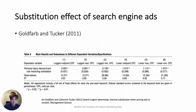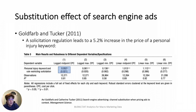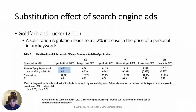This table presents the main result. The blue box indicates the estimate of coefficient δ — the lawyers' extra willingness to pay for the injury-related keyword in the solicitation-restricted cities. The estimate is 0.052, implying that a solicitation regulation leads to a 5.2% increase in the price of an injury-related keyword, supporting the finding that online advertising serves as a substitute for personal selling efforts.